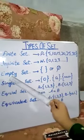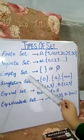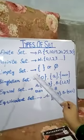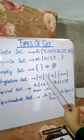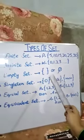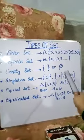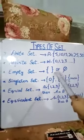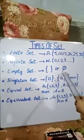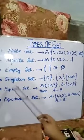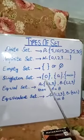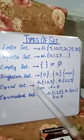Now, empty set — a set which has no element is called an empty set or null set. It is written as {} or ∅. For example, the set of whole numbers less than 0.